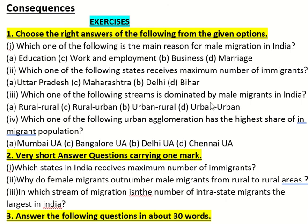Which one of the following streams is dominated by male migrants in India? Which one of the following urban agglomerations has the highest share of immigration?